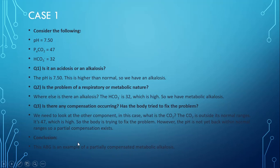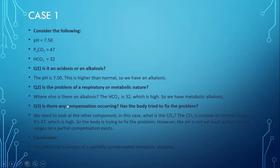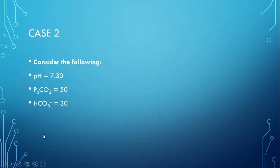This is how you report an ABG. For the assignment: given pH 7.3, CO2 50, and bicarbonate 30, answer questions 1, 2, and 3 along with the conclusion for this scenario, write it down and send it. Thank you.